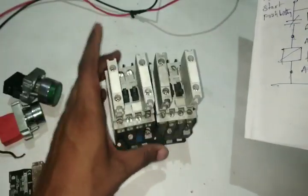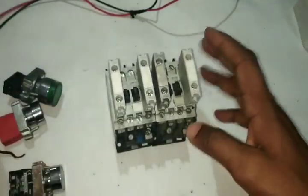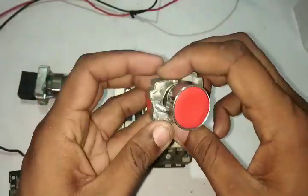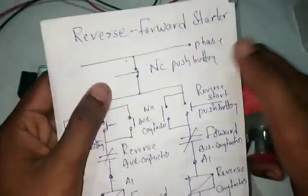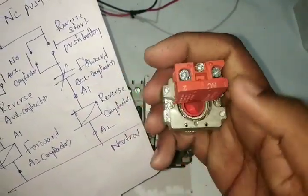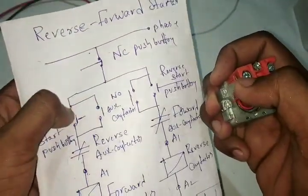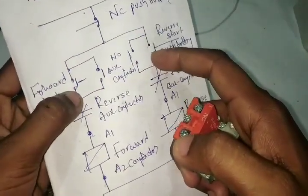I'm going to choose the right control wiring. I'm going to choose the contactor. First, I'm going to choose the NC push button. NC push button connector, first end. Here, 2 wires divide — 1 forward and reverse.